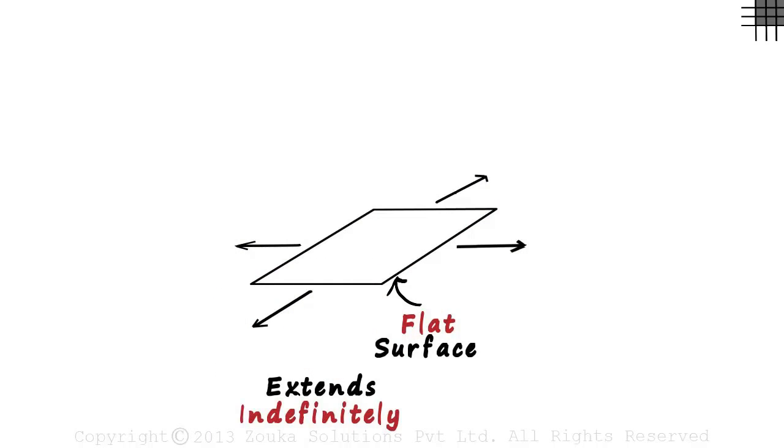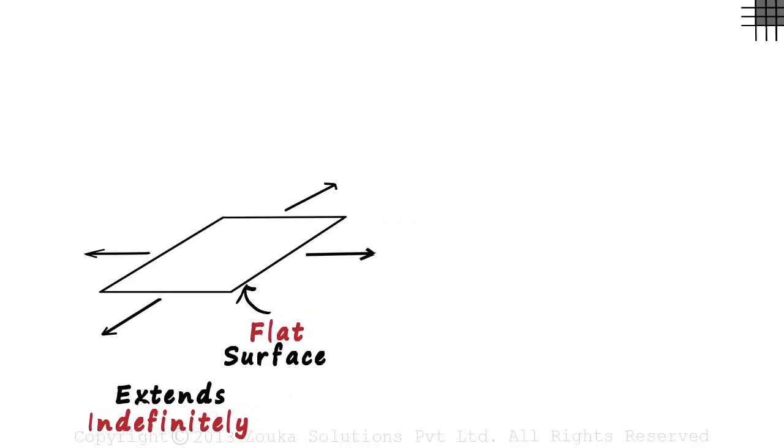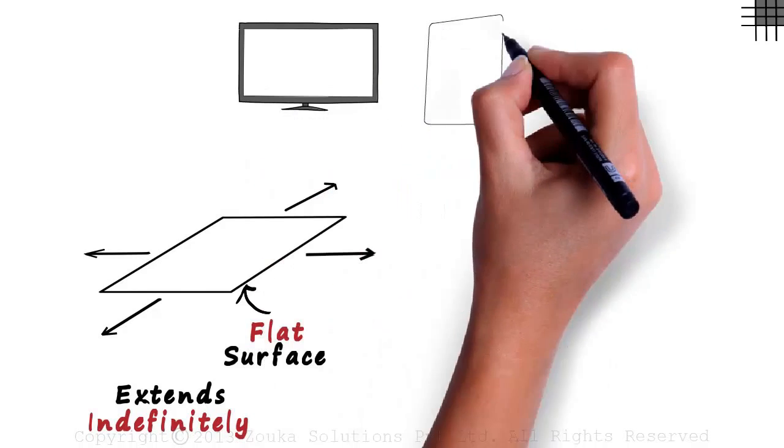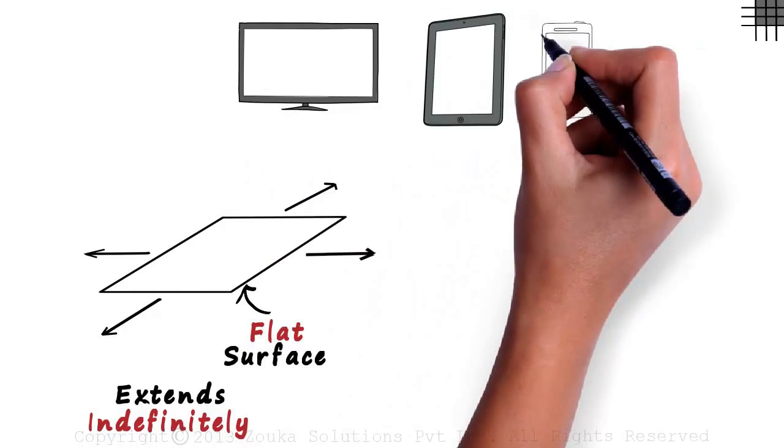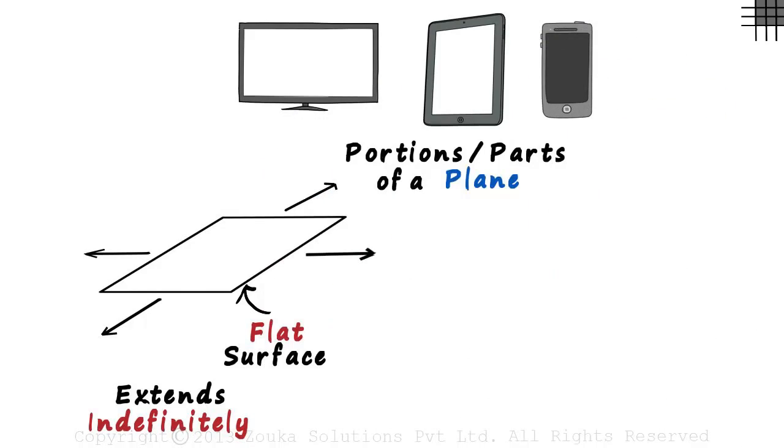This is just a part of a plane. A flat screen television, a tablet or a mobile phone are all examples of portions or parts of a plane.